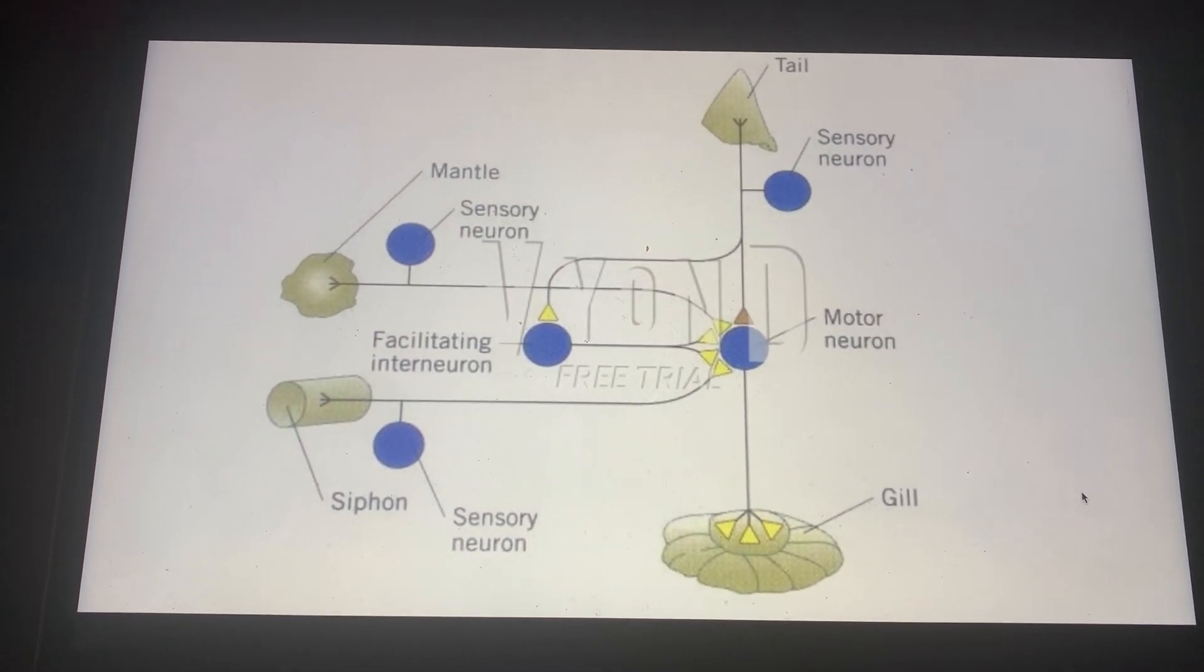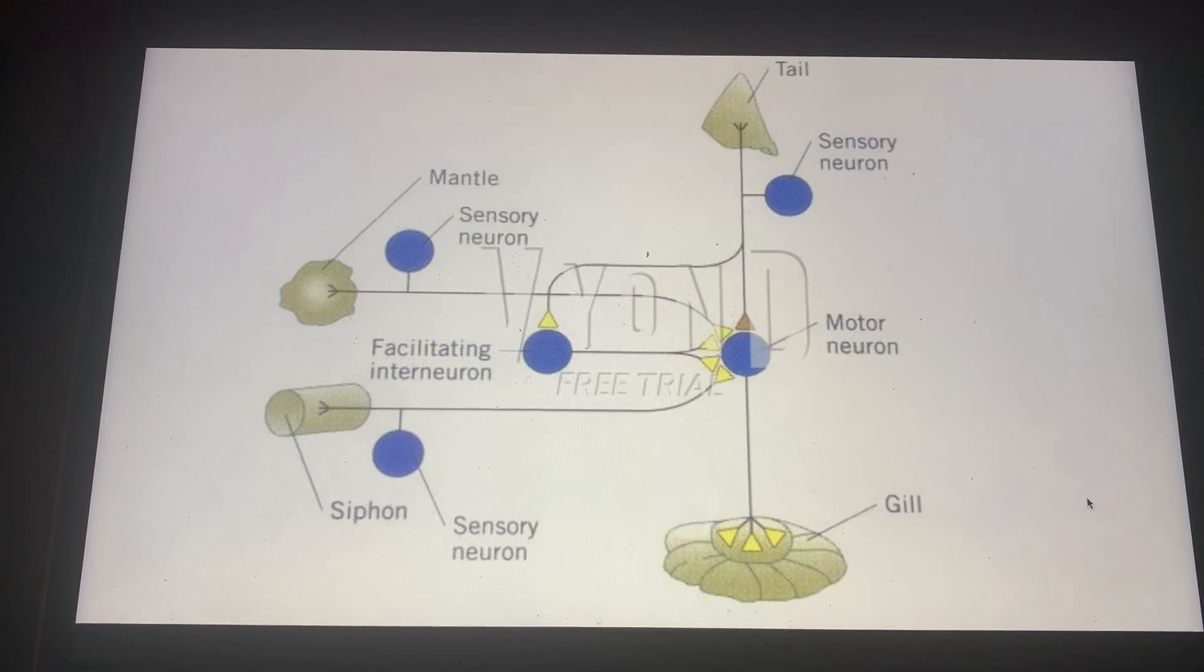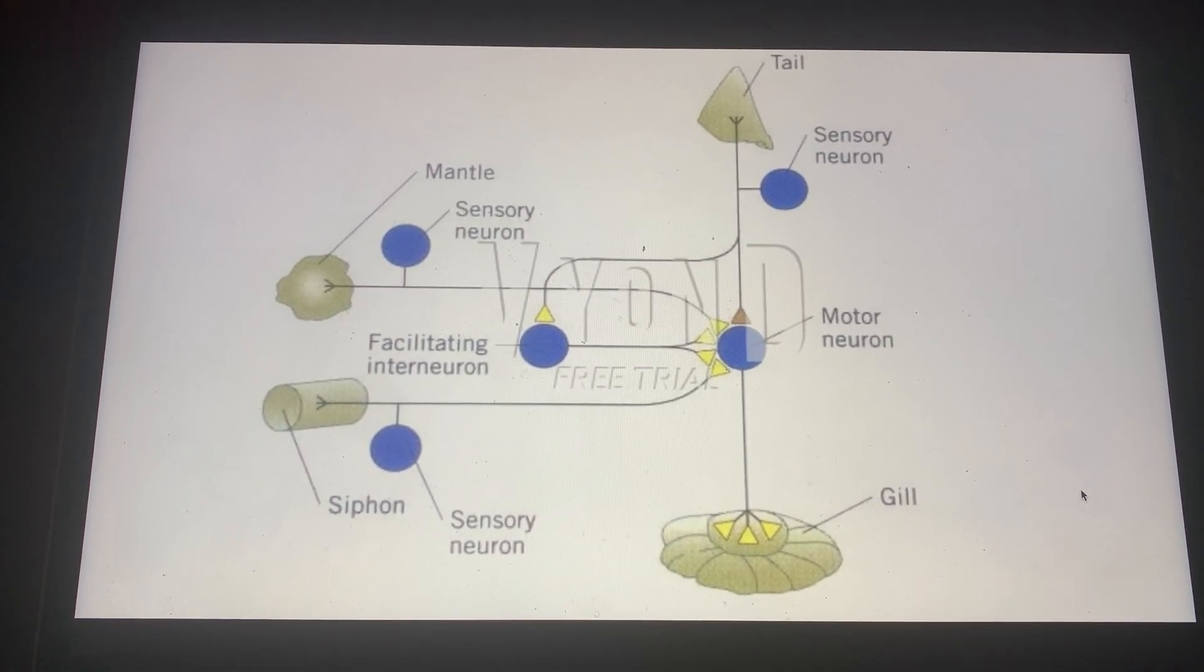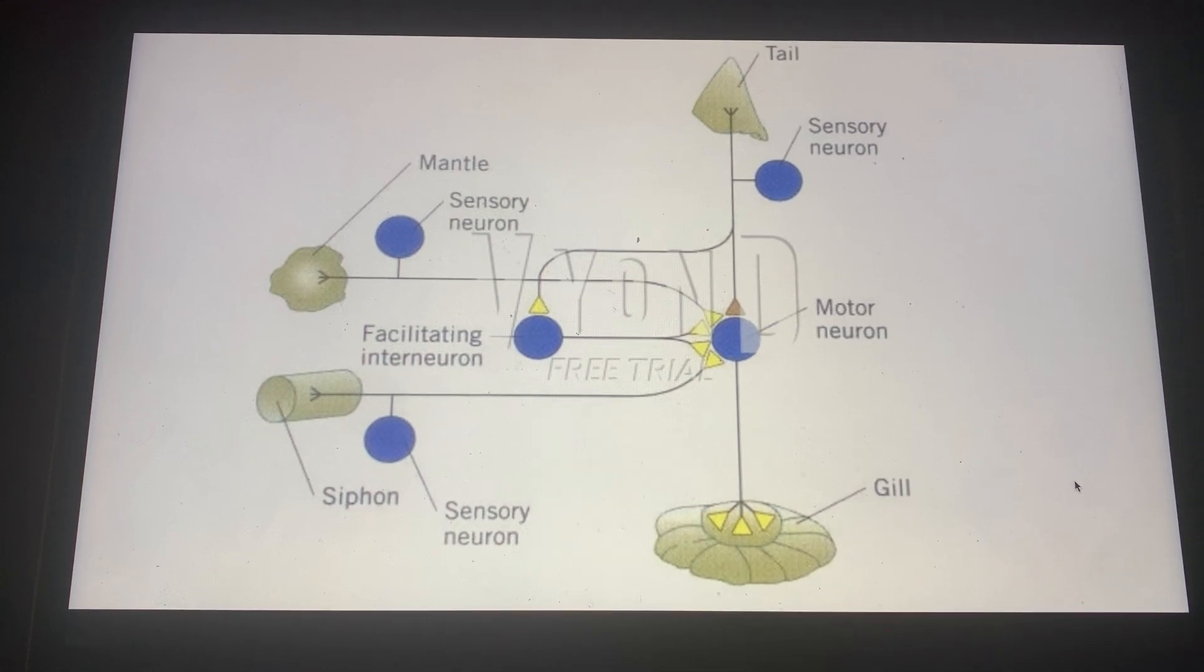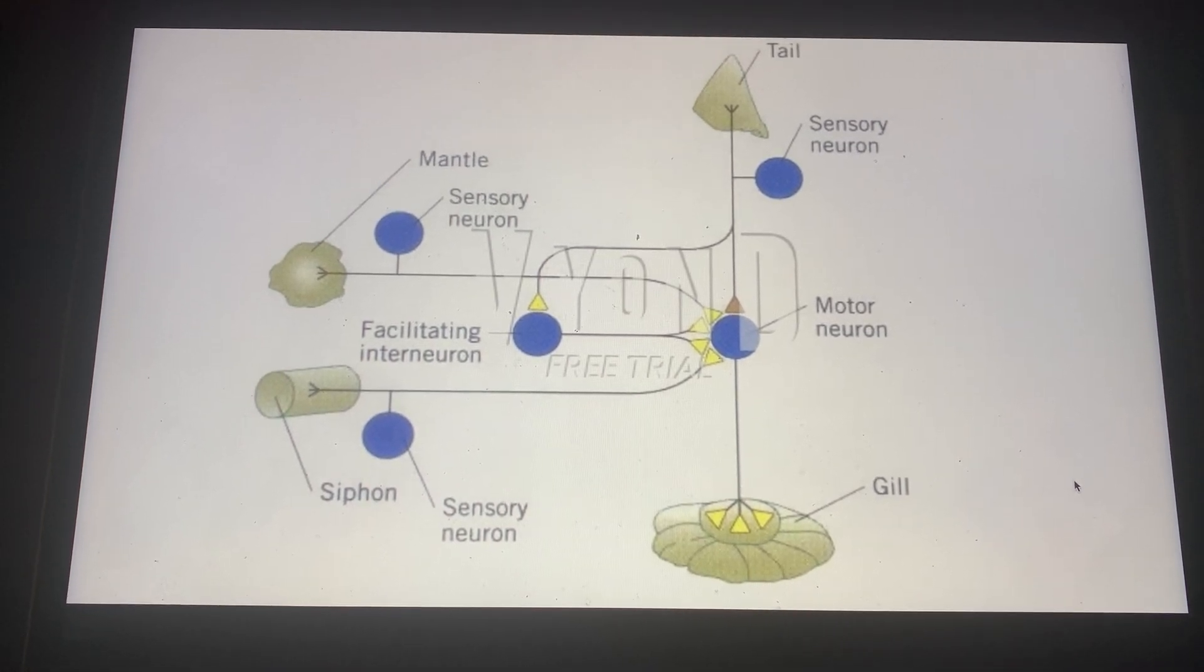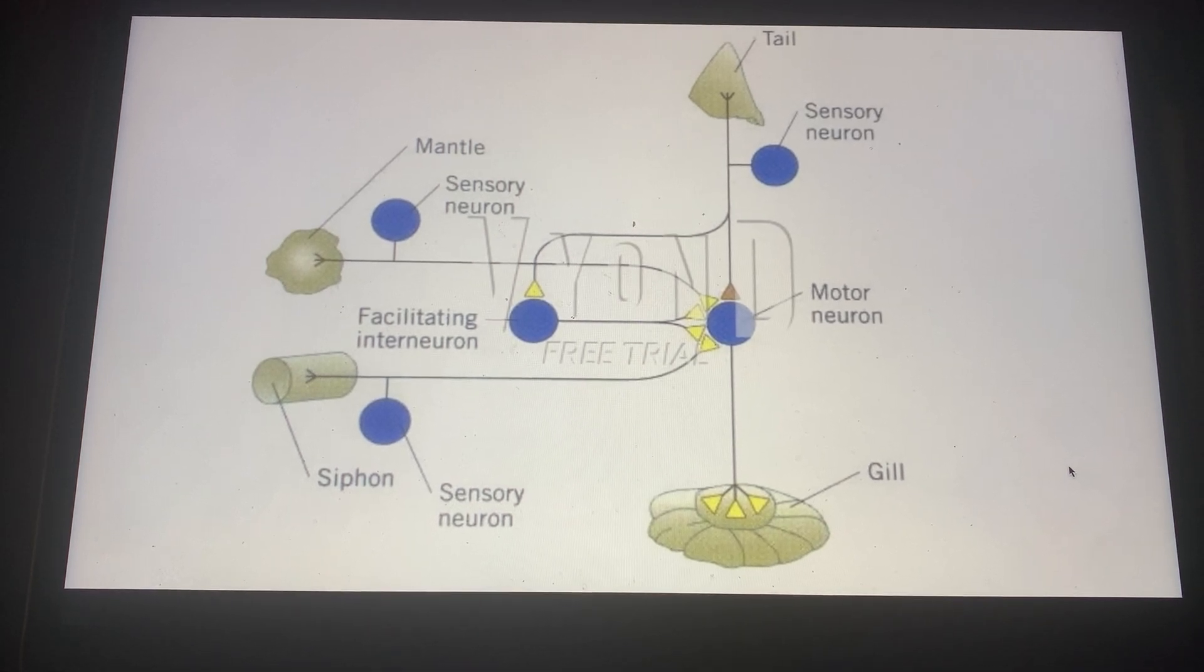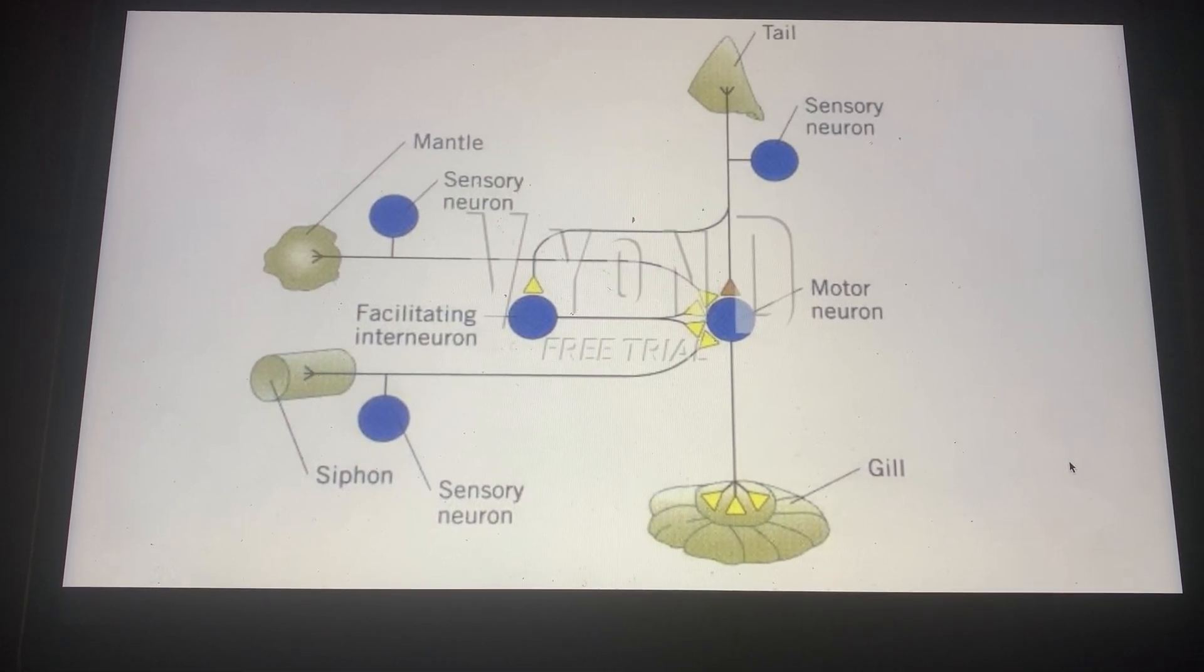Before training, we first pair the shock, which is the unconditioned stimulus of the tail, which leads to the facilitating interneuron releasing serotonin. But that comes after the initial conditioned stimulus of the touch.